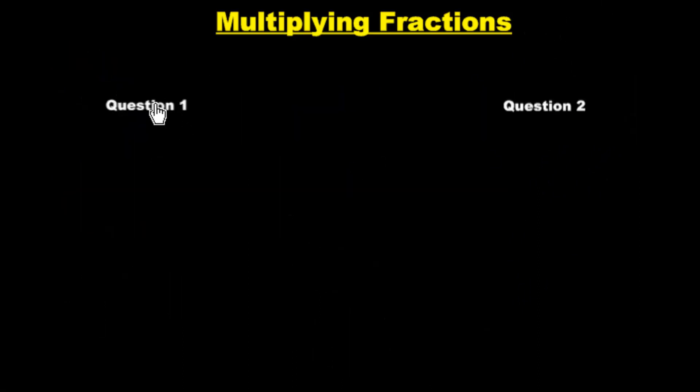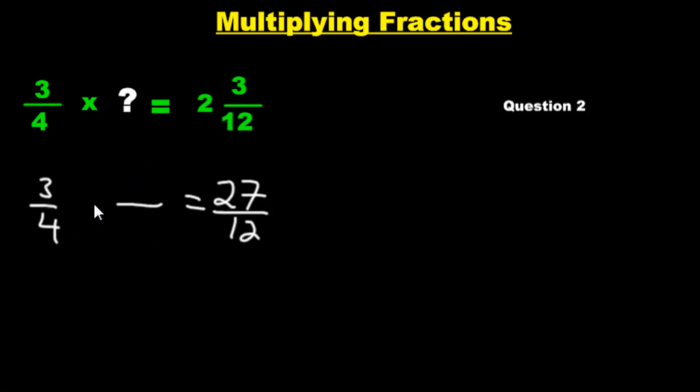Now we're going to do a little bit more advanced type of question. We have 3 fourths multiplied by a mystery number equals that. Now Mr. Melham said, yeah, don't worry about the question. Just not yet. Just change this to an improper fraction. And Mr. Melham is right. We have 12 times 2 plus 3 is going to be 24, 27. So we're going to get 27 over 12. We're going to have a mystery fraction. So we have this here, mystery number, mystery number, and we have 3 over 4 here. And we have times.